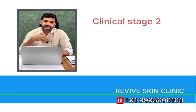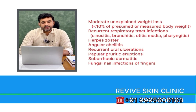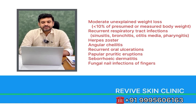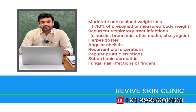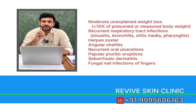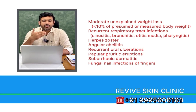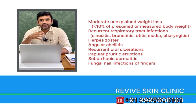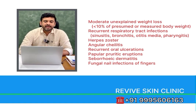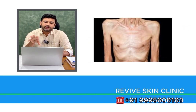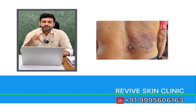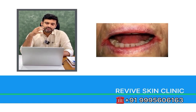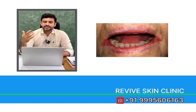When the patient goes into clinical stage 2, we can expect moderate unexplained weight loss, which is less than 10% of presumed or measured body weight. There will be recurrent respiratory tract infections in the form of sinusitis, bronchitis, otitis media, and pharyngitis. Then herpes zoster, which is the reactivation of the virus that causes chicken pox, angular cheilitis, recurrent oral ulcers, papular pruritic eruptions, seborrheic dermatitis, and fungal nail infections. Again, these symptoms can also occur without HIV infection, so please don't self-diagnose — you have to see a doctor and do the necessary tests to come to a conclusion.